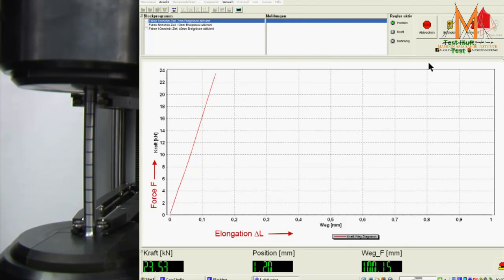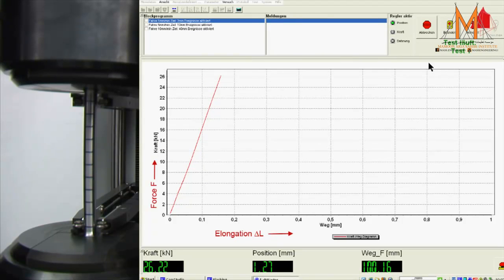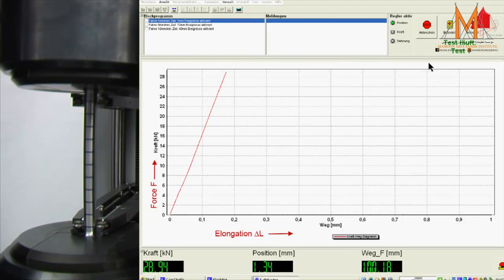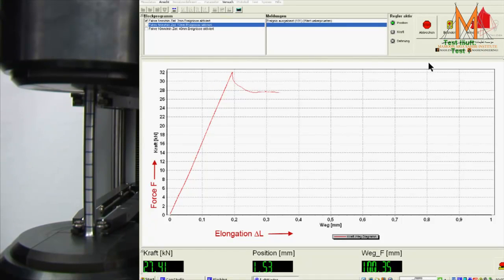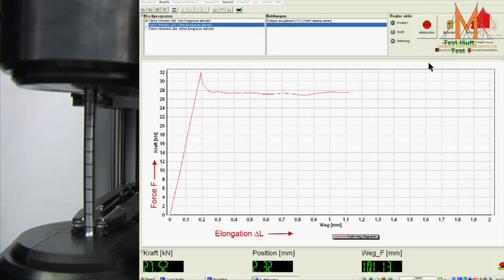In materials with yield point phenomenon, the end of the elastic area can be seen clearly. The plastic deformation starts abruptly and is accompanied by a sudden drop of force. If the test piece were to be unloaded now, it would not spring back to the original length, but instead show a permanent elongation.